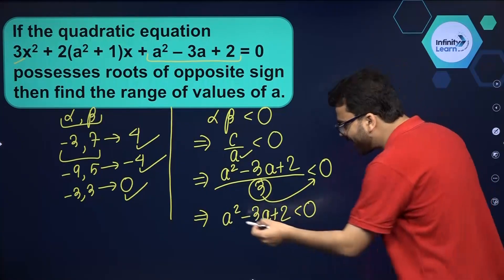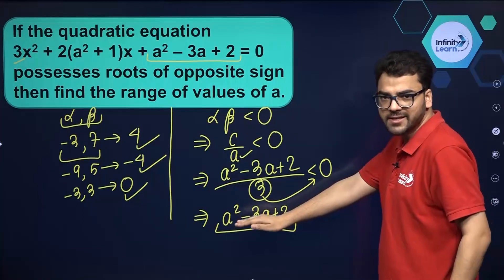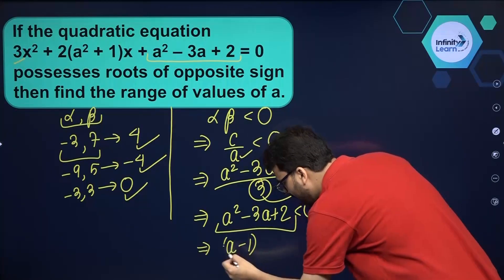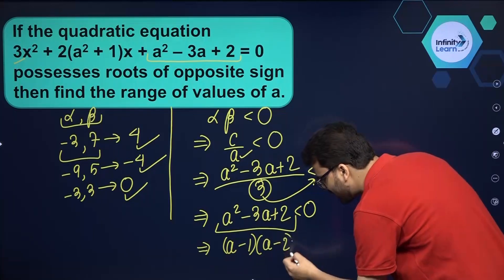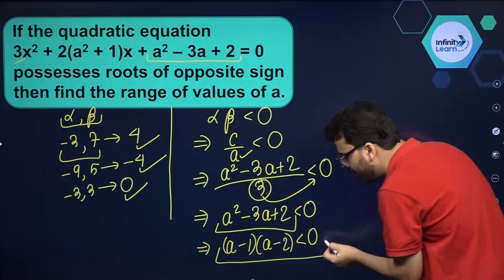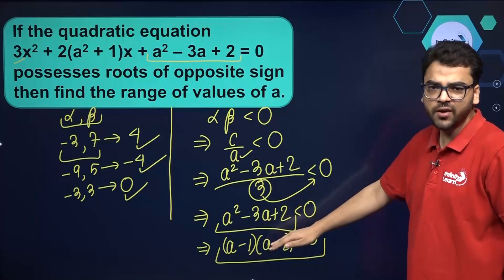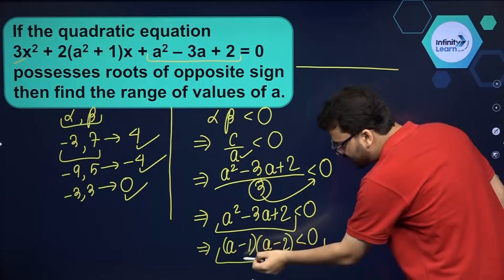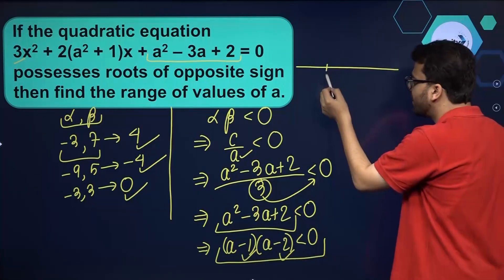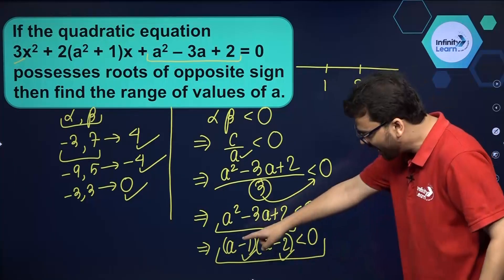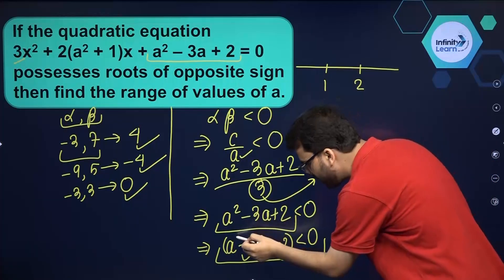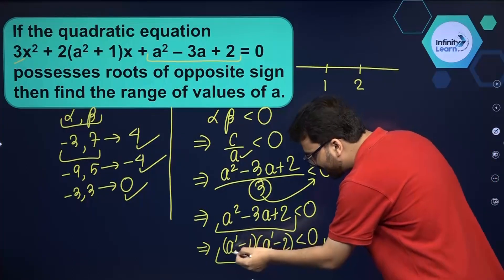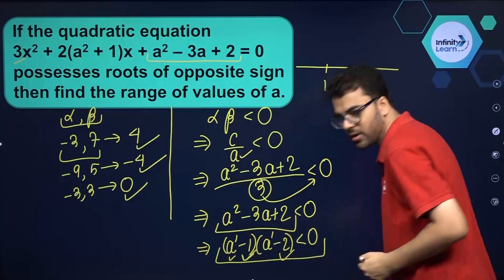Now you see this is a quadratic expression, and it can be factorized very easily. After factorization you will get (a minus 1)(a minus 2) less than 0. Now we have to find the range of values of a, for which we are going to use the wavy curve method — a very simple method. On the number line the zeros are 1 and 2. The highest exponent of the variable is a raised to the power 1 — linear factors.